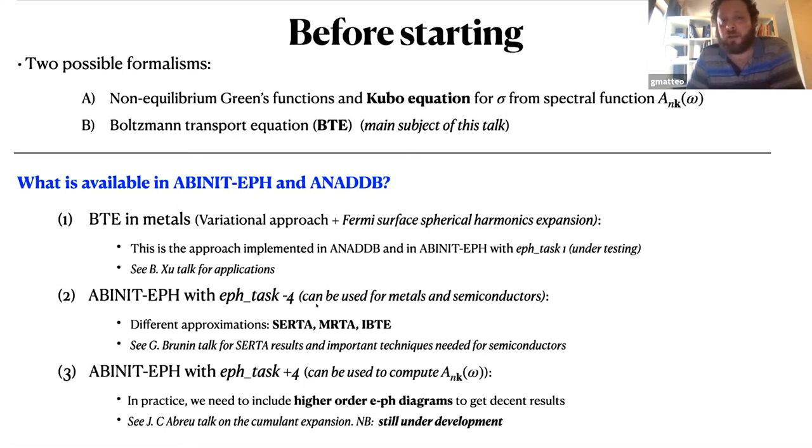In principle ABINIT can also compute the Kubo equation from the spectral function. The problem is that in order to get a decent spectral function we have to include high-order electron-phonon diagrams and this is the topic that will be discussed by João in his talk on the cumulant expansion.